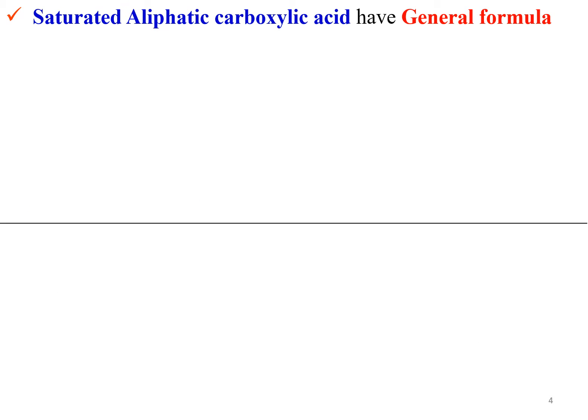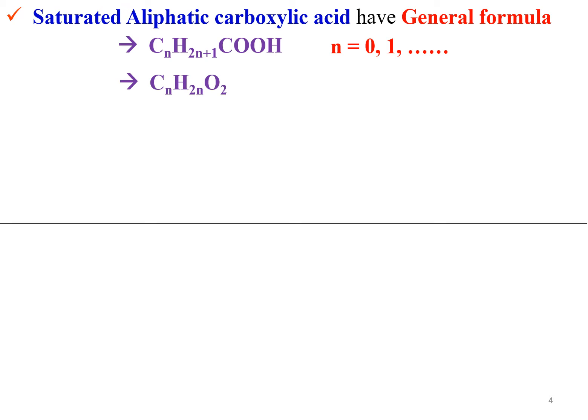Saturated aliphatic carboxylic acids have the general formula CnH2n+1COOH, where n equals 0, 1, and so on; or can be written as CnH2nO2, where n starts from 1, 2, and so on.